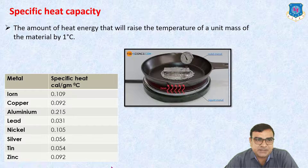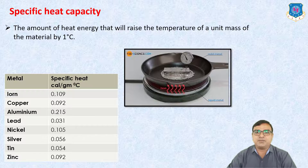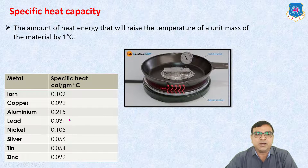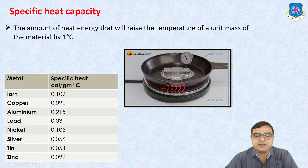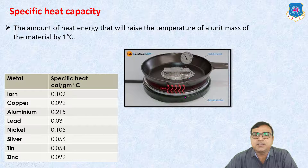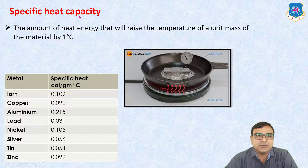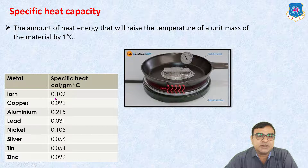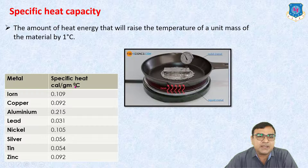Specific heat capacity: the amount of heat energy that will raise the temperature of a unit mass of material by 1 degree. It is the amount of heat change per degree centigrade, and whatever energy is given is known as specific heat capacity. For iron, the specific heat is 0.109 calories per gram per degree centigrade.